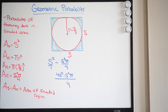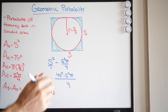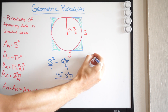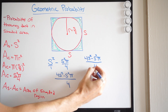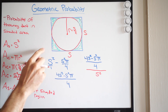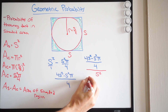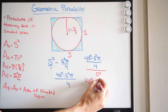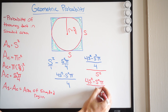Now what we want to do is take this and divide by the total area, which in this case is S squared. That will give us our probability. So rewriting, we're going to have 4S squared minus S squared pi, all over 4, divided by S squared. When we do this, we get 4S squared minus S squared pi, all over 4S squared.